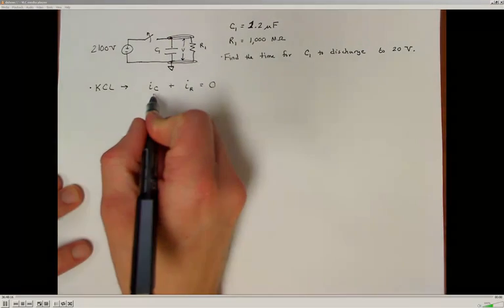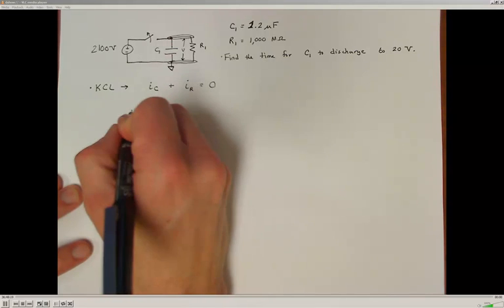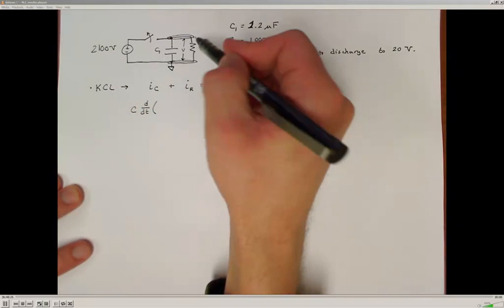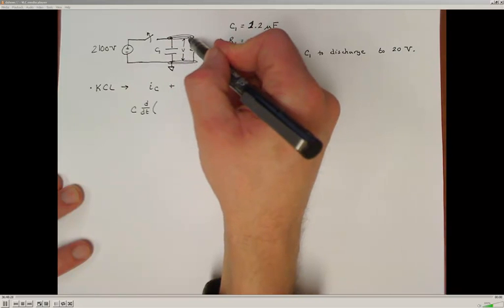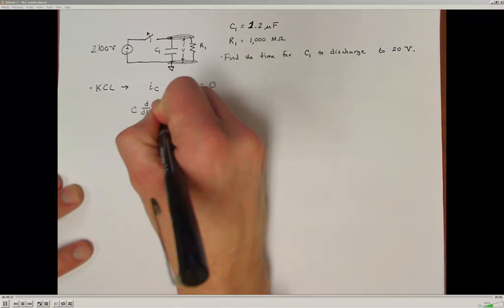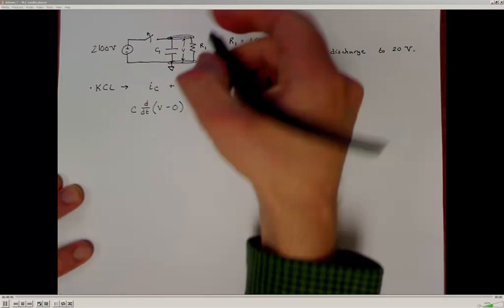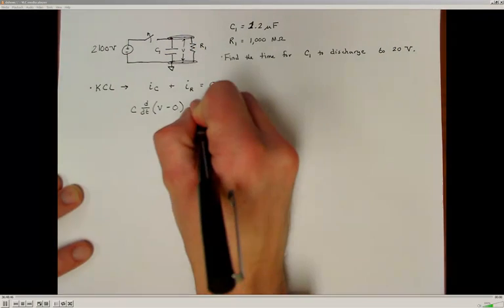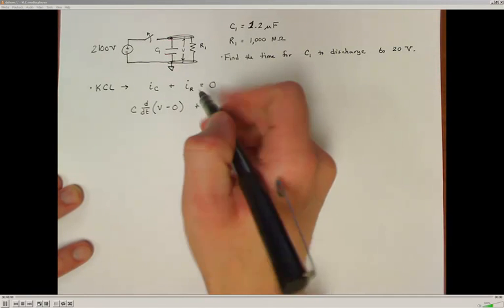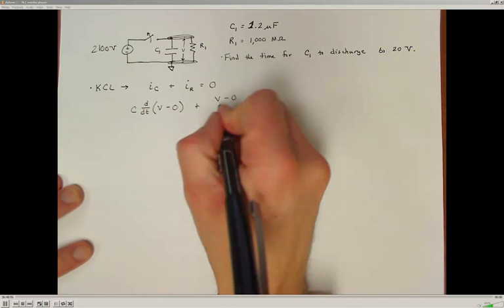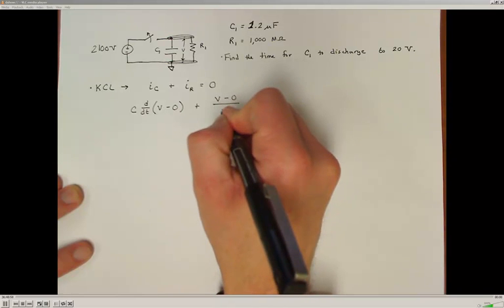The current-to-voltage relationship for the capacitor is C times the rate of change, or the time derivative, of the potential developed across that capacitive element. Calling this node V and the bottom node zero, the potential across the capacitor is V minus zero. For the resistor, we're just going to use Ohm's law: that's going to be the voltage at the top node minus zero volts divided by the resistance of that element.